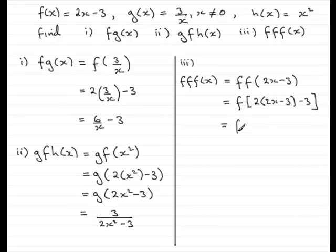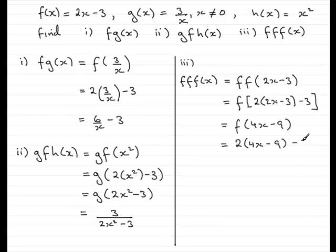Simplifying this, we have f of 4x minus 6 minus a further 3, so that's 4x minus 9. All I need to do now is replace x in f of x with 4x minus 9. So we've got 2 lots of 4x minus 9, then minus 3. Expanding and simplifying, we have 8x minus 18 minus 3, which is 8x minus 21.